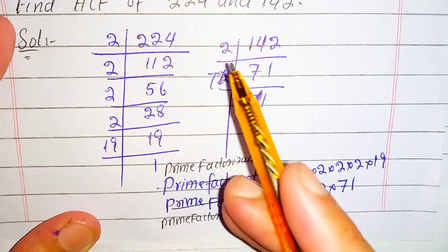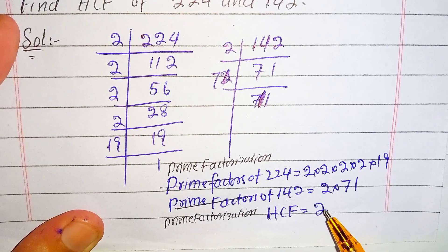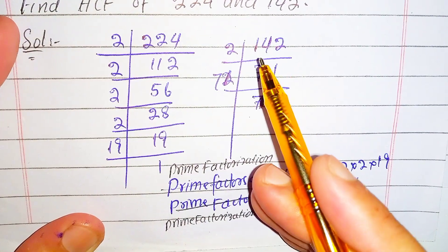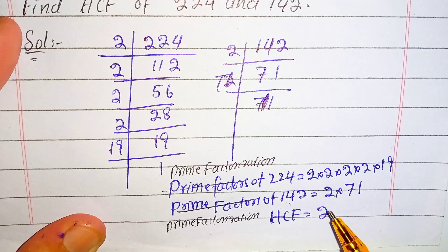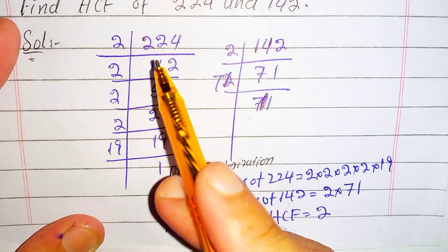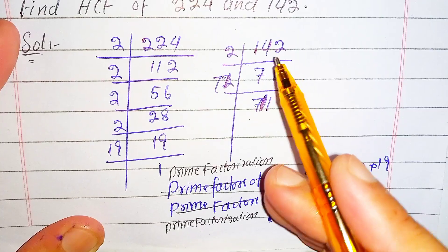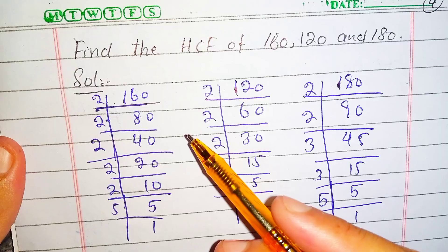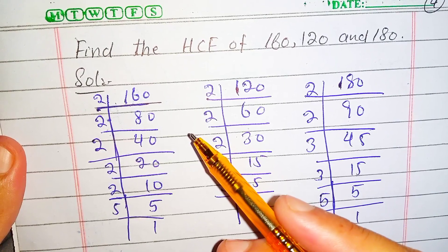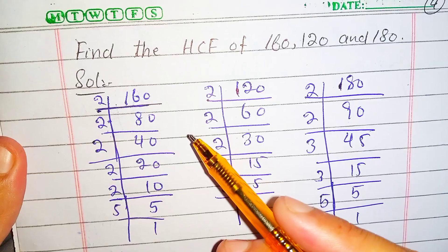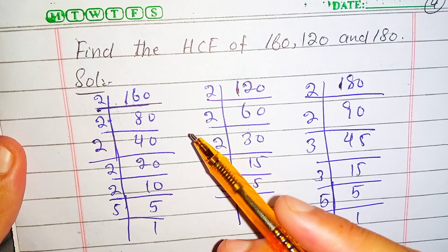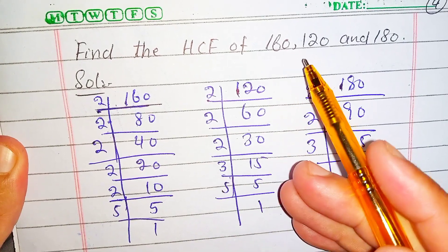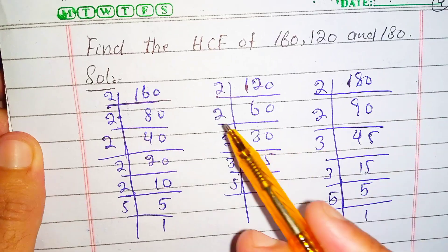So the HCF of 224 and 142 is 2. 2 is the greatest factor that divides both 224 and 142 simultaneously, and there is no other number greater than 2 that divides both at the same time. Now we are going to find the HCF of three numbers. You can also find the HCF of as many numbers as you want. Here we will find the HCF of 160, 120, and 180.